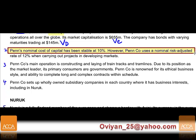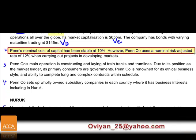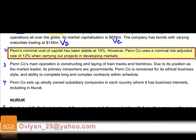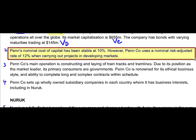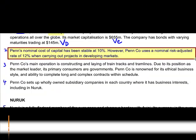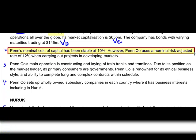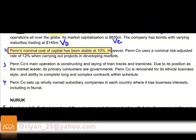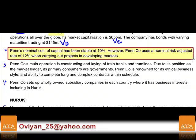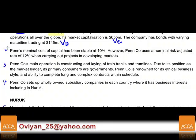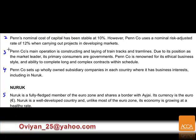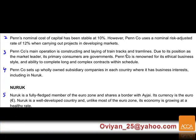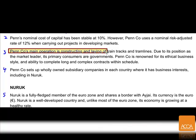Penn's nominal cost of capital has been stable at 10%. However, Penn uses a nominal risk-adjusted rate of 12% when carrying out projects in developing markets. We need to determine whether this project qualifies as a developing market context to decide which rate to use.